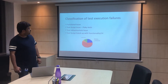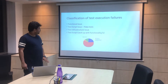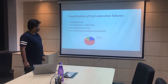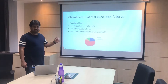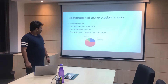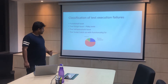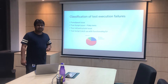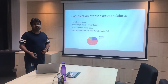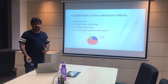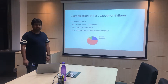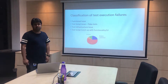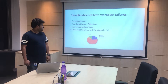Coming to test execution failures, we have four kinds of failures. The classification goes like: functional issue, test script issue, basically the flaky tests, test infrastructure issue, and test catch-up with functionality of UI. Basically whenever UI changes or functionality changes, the test cases should also be changed. This is the failure analysis we typically do on a day-to-day basis.